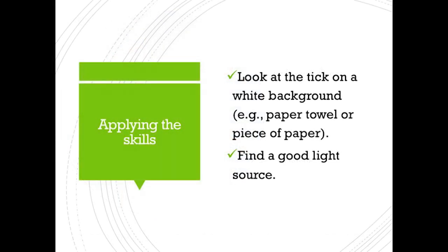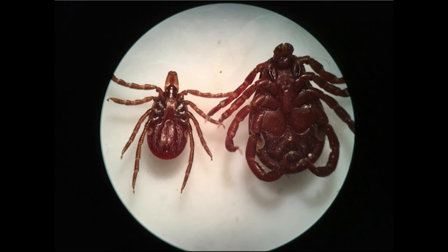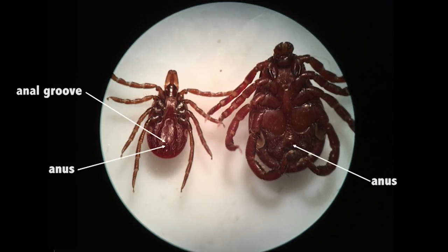Now we're going to apply some of these skills and look at a couple of different tick samples. If you're at home, the best way to look at a tick sample is to put it on a white background — a paper towel or a piece of paper — and find a really good light source, such as a couple of extra flashlights or a good flashlight on your cell phone. In this image we have two tick samples. The first thing we want to do is flip the tick over, and then look for the anus and the anal groove. On the left-hand side, we can identify the anus, and there's an anal groove that goes above the anus, so we know that this tick is an Ixodes species. The tick on the right-hand side — the groove is actually below the anus, and therefore we know that this species of tick is not an Ixodes species.